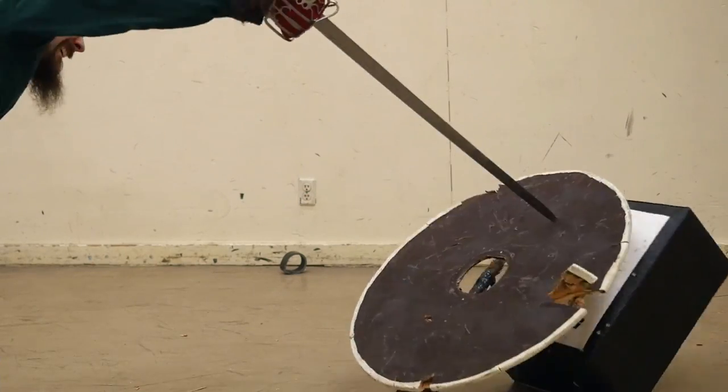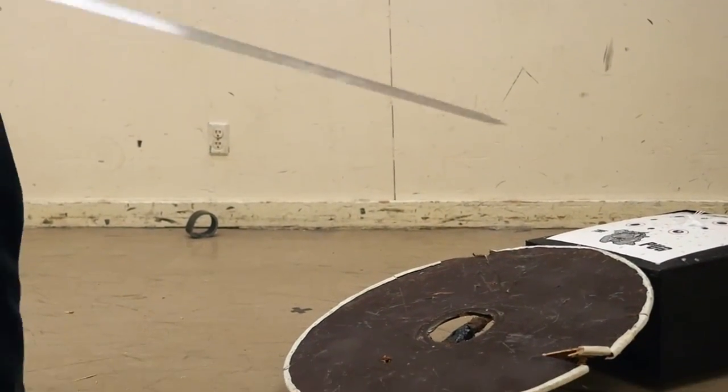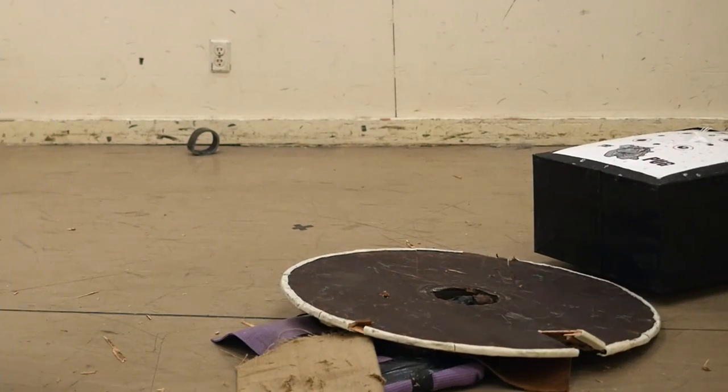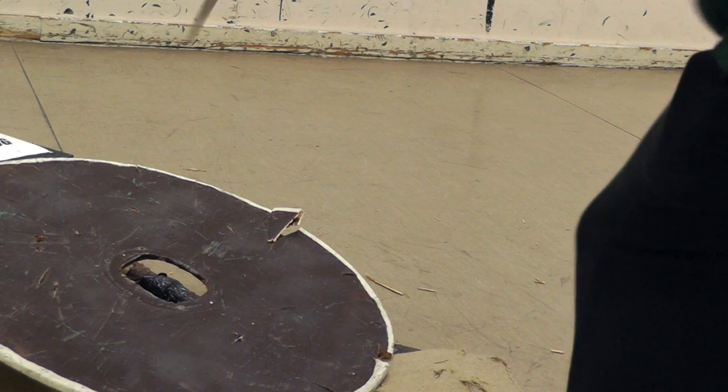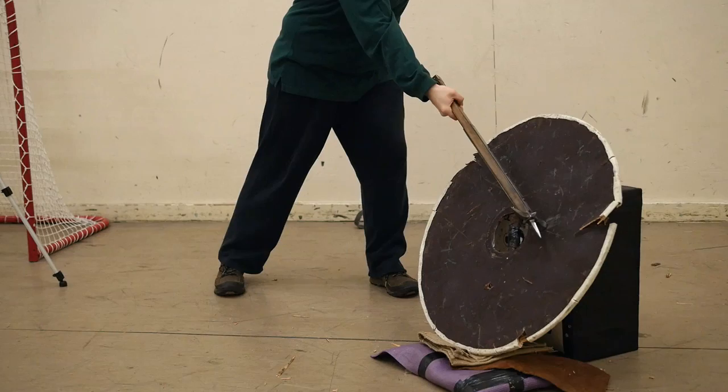Thrusting with a sword against the front of the shield does pretty much nothing. Very minor damage. Especially with a sword like this that is pretty flexible. You're really not gonna accomplish much there.